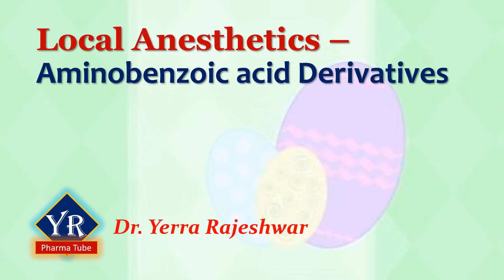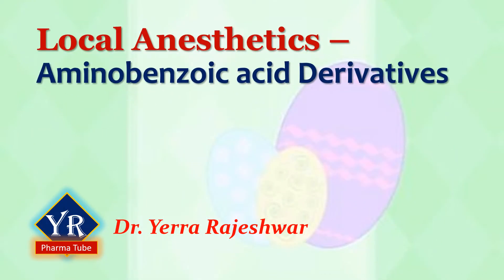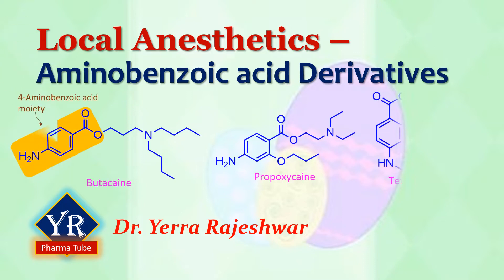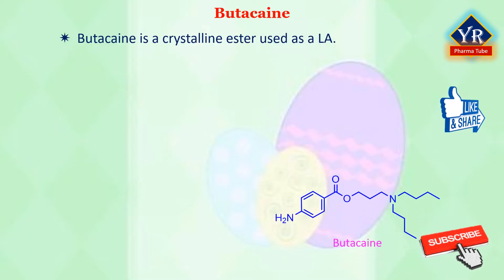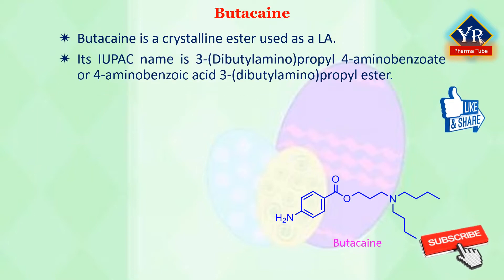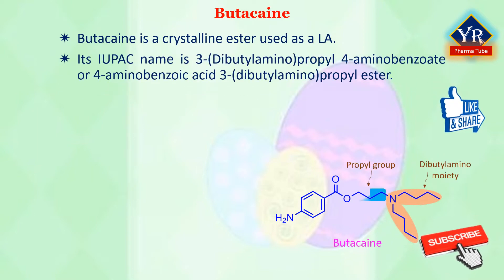In this lesson, we shall discuss the other amino benzoic acid derivatives such as benzocaine, propoxicaine, tetracaine, and benoxinate. The first drug of this lesson is butacaine. Butacaine is a white crystalline ester used as a local anesthetic. Its IUPAC name is 3-dibutylaminopropyl-4-amino-benzoate, or 4-amino-benzoic acid-3-dibutylaminopropyl ester.